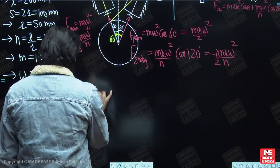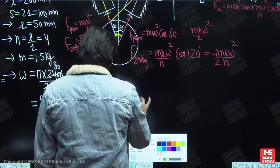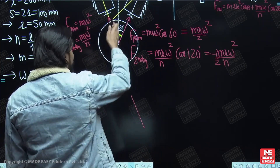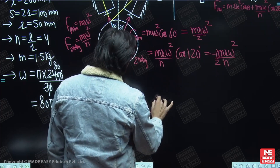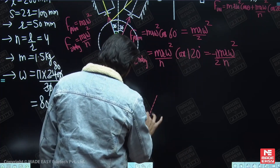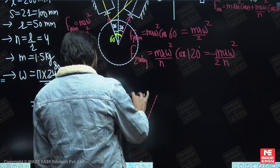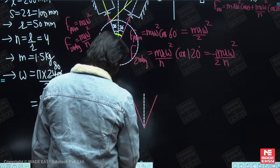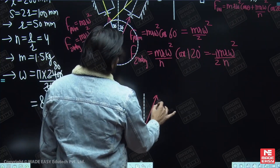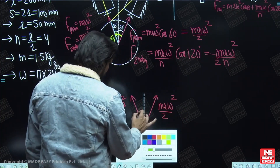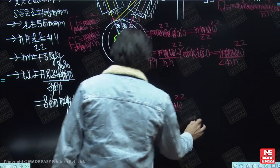We need to find the net primary and secondary forces. The first primary force is m·r·ω² along the first cylinder's line of stroke, making 30 degrees from vertical. The second primary force is m·r·ω²/2 along the second cylinder's line of stroke, also making 30 degrees with the vertical on the other side. Let us calculate the value of m·r·ω²: m = 1.5 kg, r = 0.05 m, ω = 80π rad/s. So m·r·ω² = 1.5 × 0.05 × (80π)² = 4737.41 N, and m·r·ω²/n = 4737.41/4 = 1184.35 N.